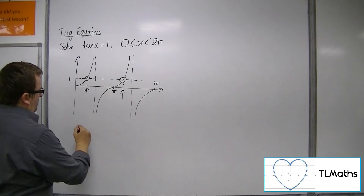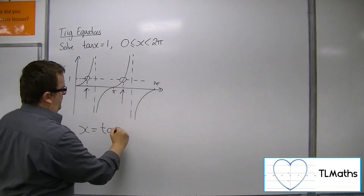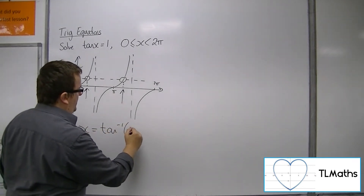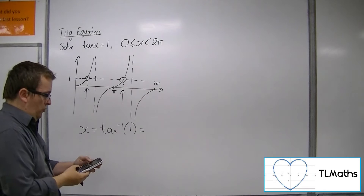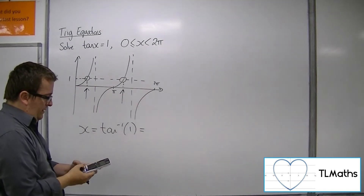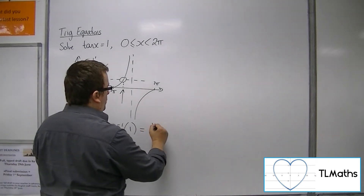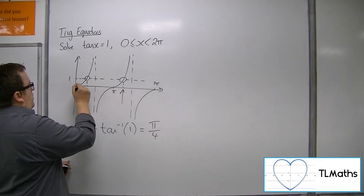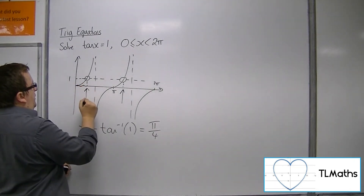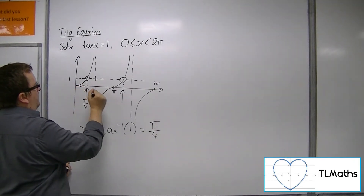We can find the first solution by doing the inverse tan of 1. Making sure your calculator is in radians, we get a quarter pi, or pi over 4. So that distance there must be pi over 4.